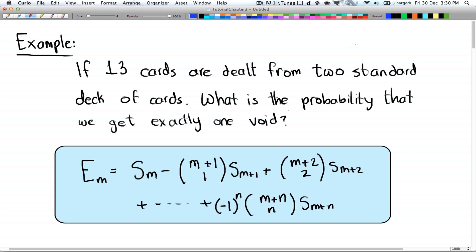Alright, so you have first of all 2 standard decks of cards. That's 52 times 2, so you have 104 cards to choose from. And you want only 13, so you have 104 choose 13. That's your whole sample space.